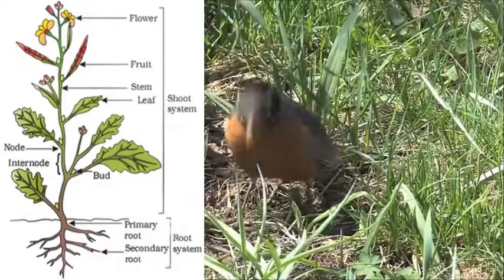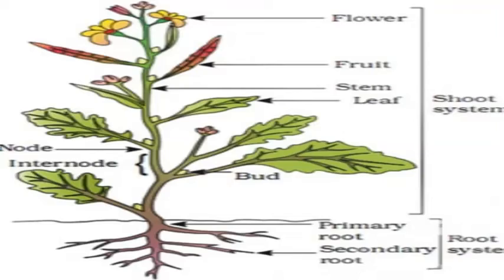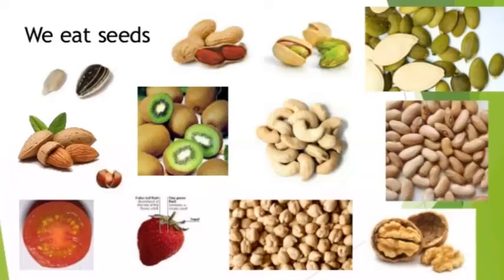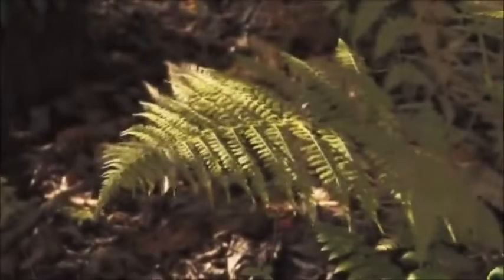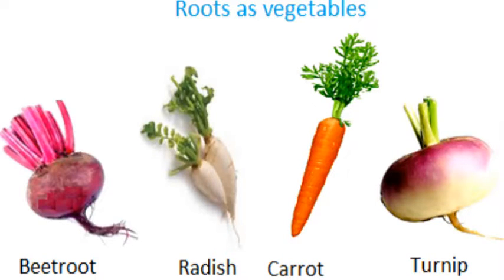As you can see in the figure, the shoot part is divided into stem, flower, fruit, branch, and leaf. Different parts of plants like stem, flower, fruit etc. are eaten as food. In the case of gram and moong, we eat the seed of the plant. In the case of potato and radish, we eat the root of the plant.